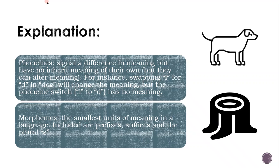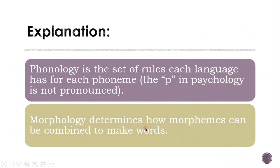Morphemes are the smallest units of meaning in a language, and included are prefixes, suffixes, and the plural S suffix. Phonology is a set of rules each language has for each phoneme — for example, the P in 'psychology' is not pronounced. And morphology determines how morphemes can be combined to make words.